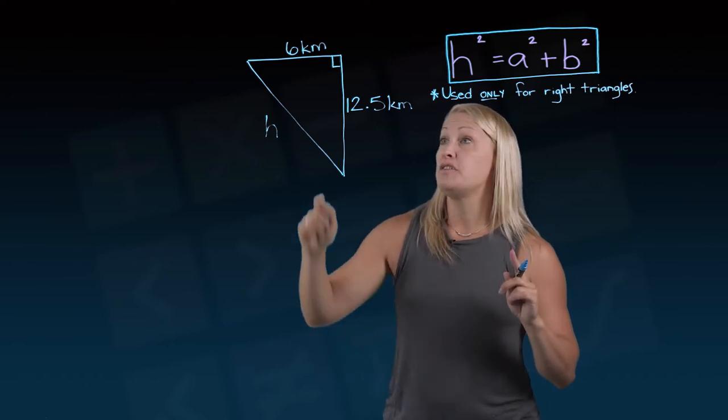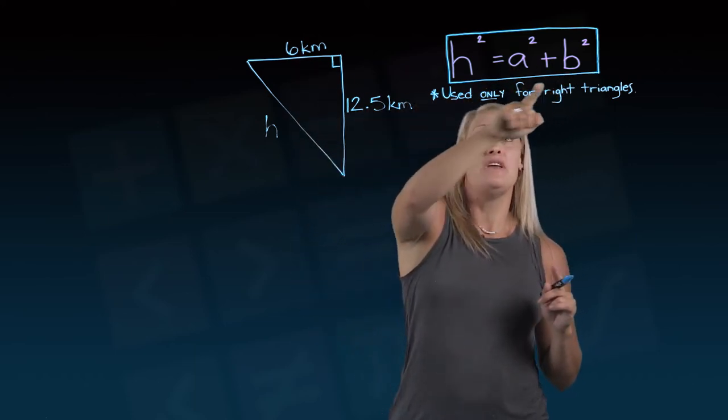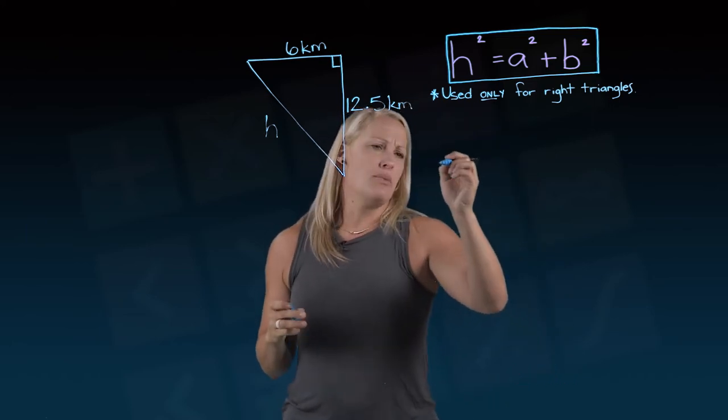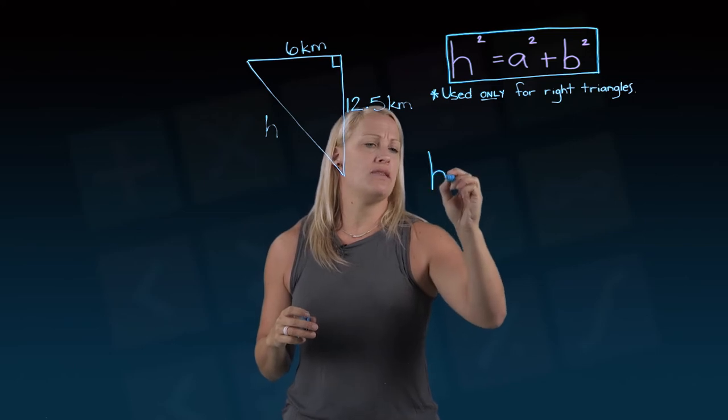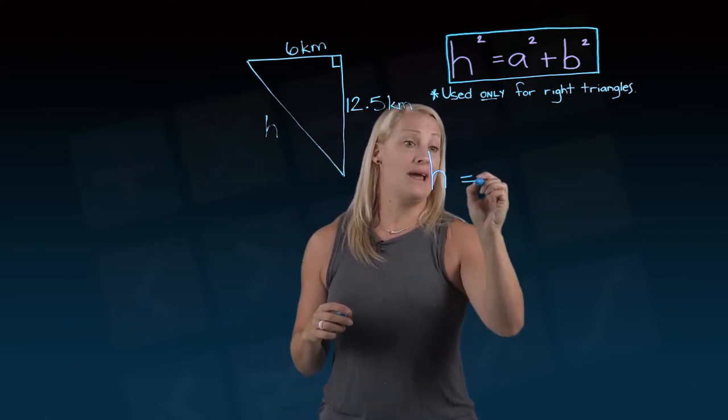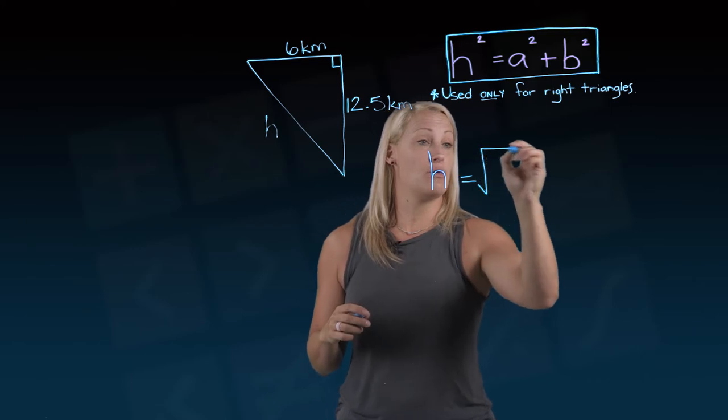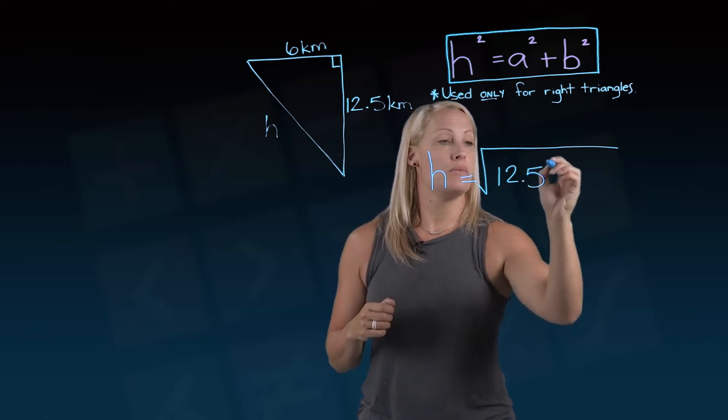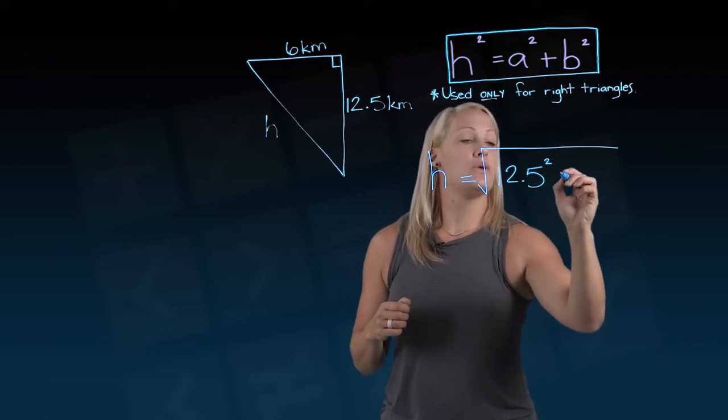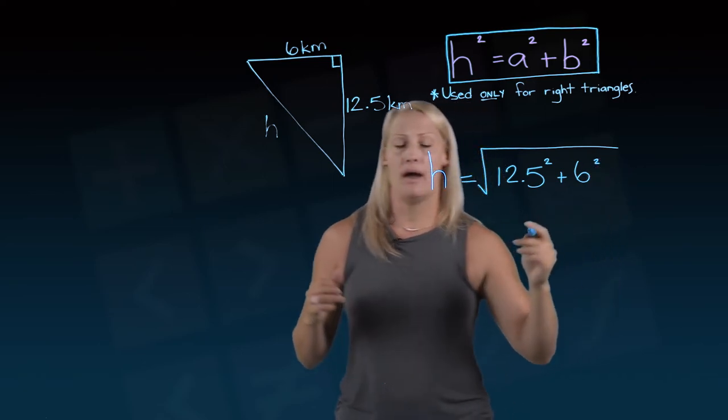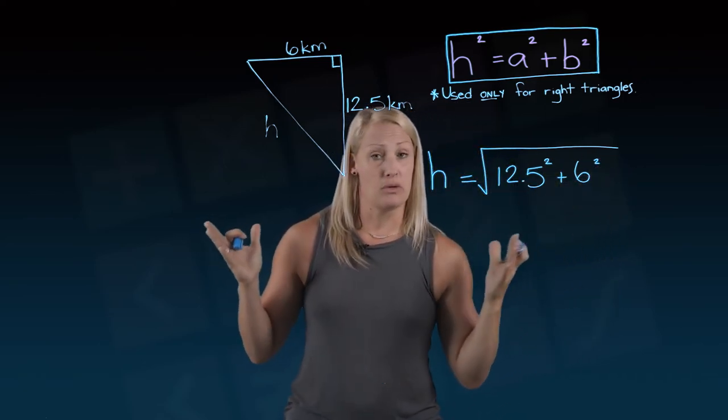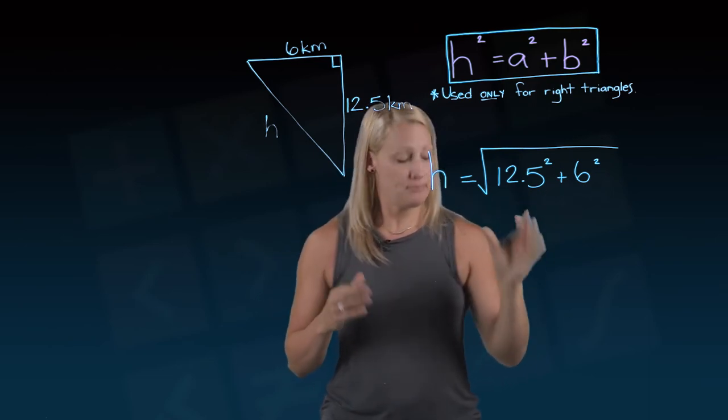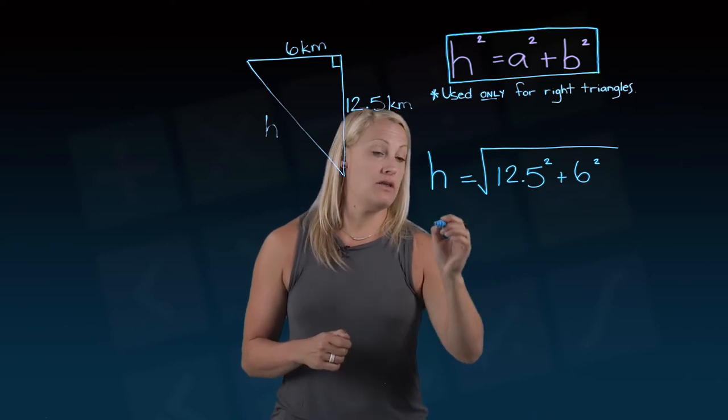But the key to this question is going to be that these two guys are our a and b value and the hypotenuse is staying on the other side by itself. So something to think about is if I wanted to I could actually rewrite this Pythagorean theorem as h equals the square root of 12.5 squared plus 6 squared. So I've sort of skipped that step of eliminating the squared by putting the square root. They actually both mean the same thing. So if you want to skip that step, that's fine.